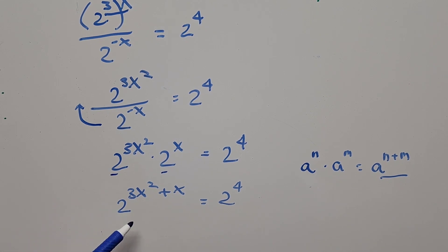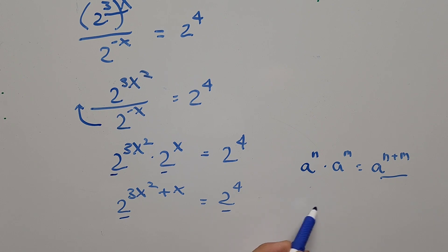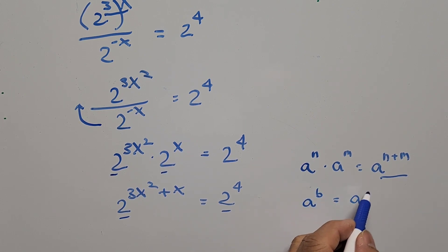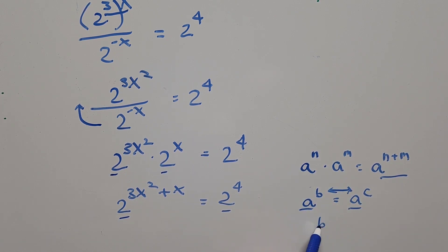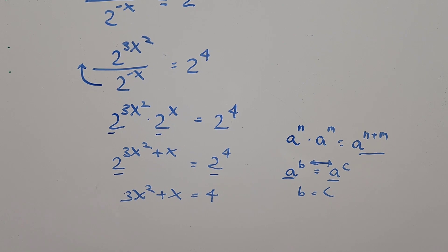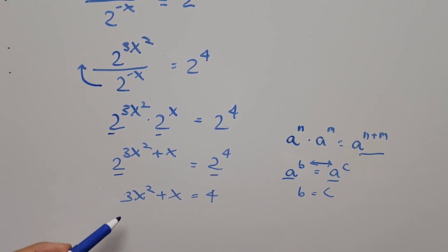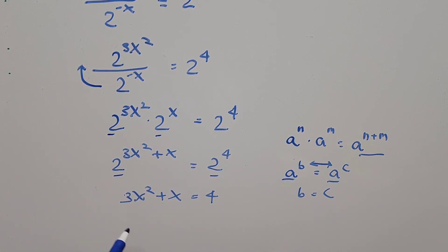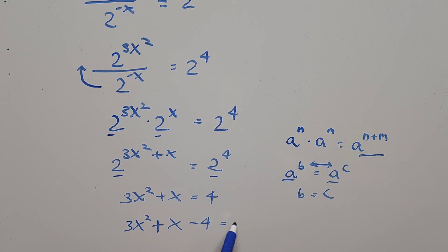The left-hand side now becomes 2 to the power of 3x squared plus x equals 2 to the power of 4. Since both sides have the same base 2, we can equate the exponents. Based on the formula: if a to the b equals a to the c, then b equals c. So the equation becomes 3x squared plus x equals 4, which we write in standard form as 3x squared plus x minus 4 equals 0.